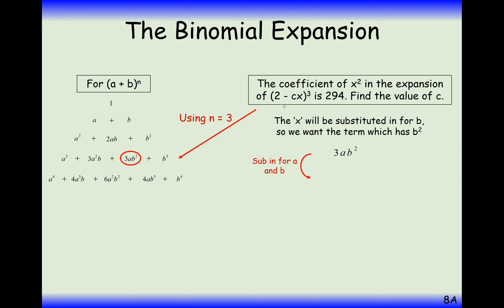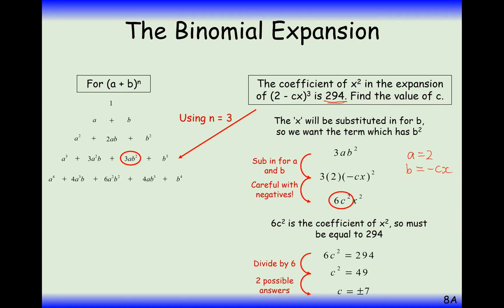Here, a is going to represent 2 and b is going to represent minus cx. So substitute those in. And this answer is going to be 294x squared. So being really carefully in negatives here, it's going to be 6c squared. Now, we know the coefficient on the x squared here is 294. So we can set 6c squared equal to 294. So c here is either positive or negative 7. So when you're doing a question like this where you're only looking at one type of coefficient, you don't need to expand out the whole brackets. You just need to look for the term you're interested in.